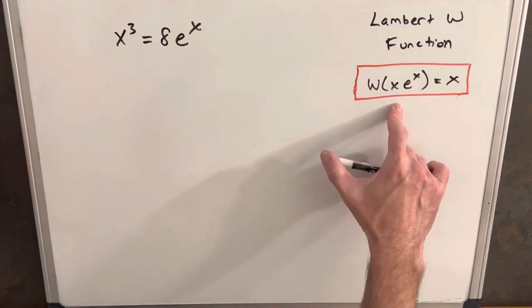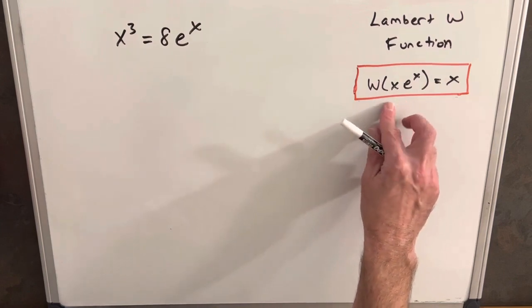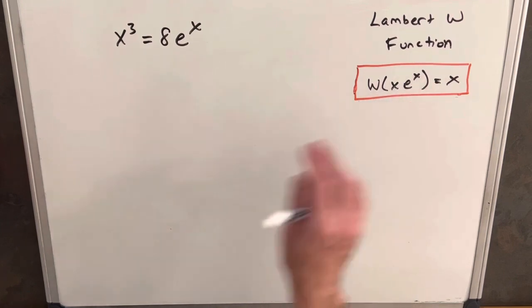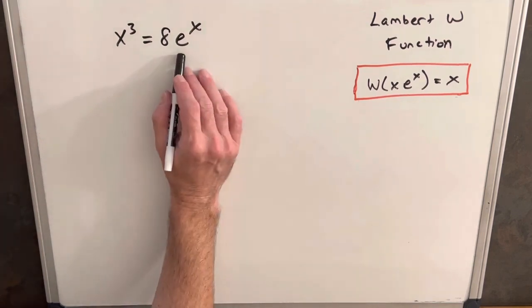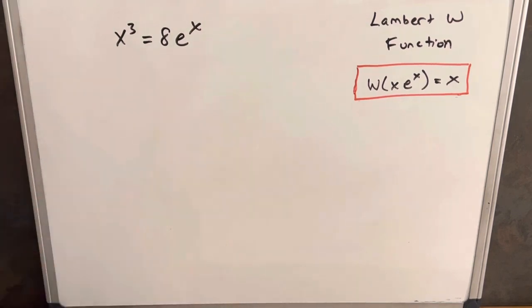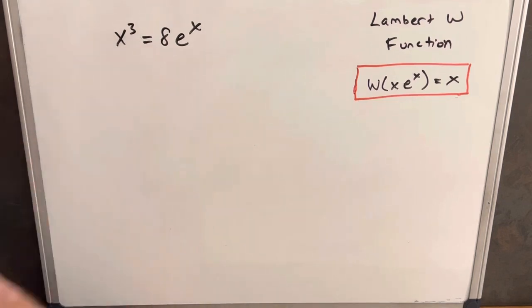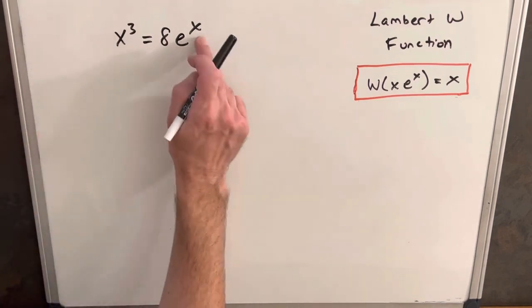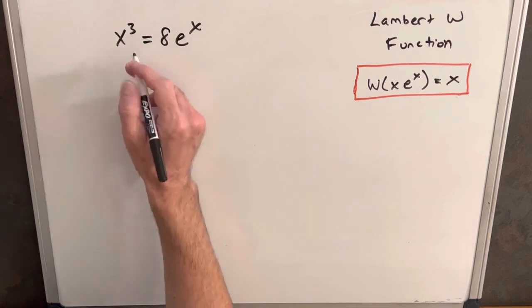I want to manipulate this to get it into the formula where we have the same input as the exponent. It's nice that we already have the e, but the first problem I see is this exponent of 3. We need to match the exponent, so before I bring it over, I'm going to take a cube root on both sides.